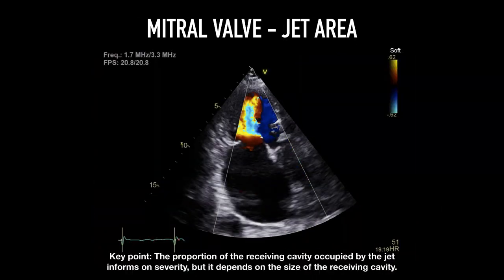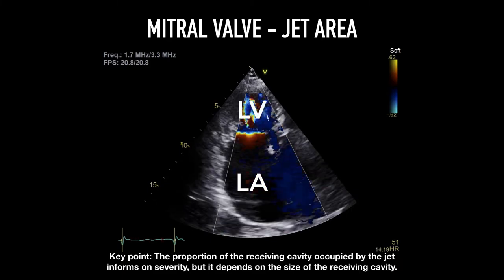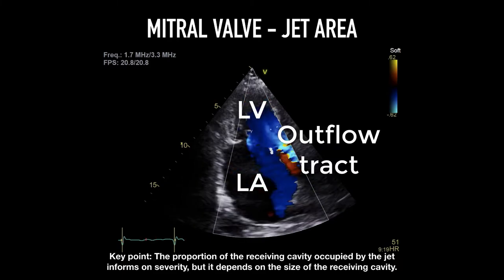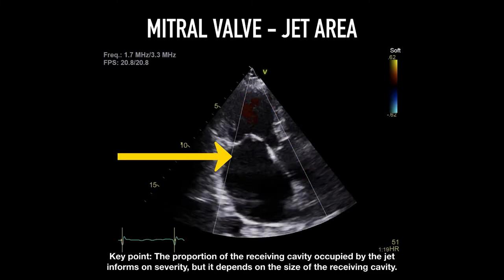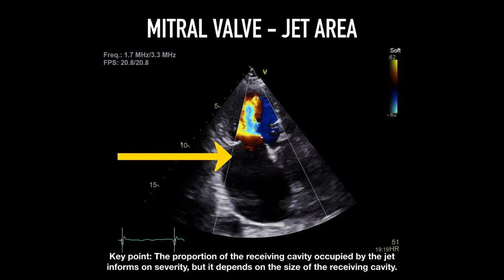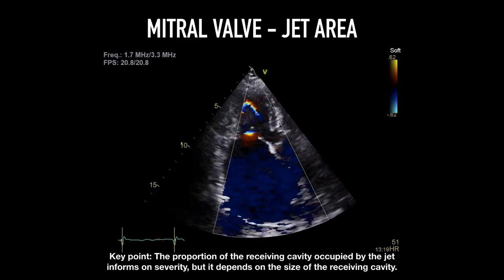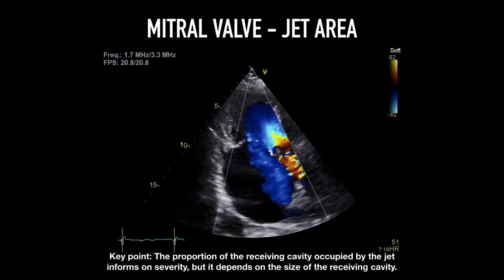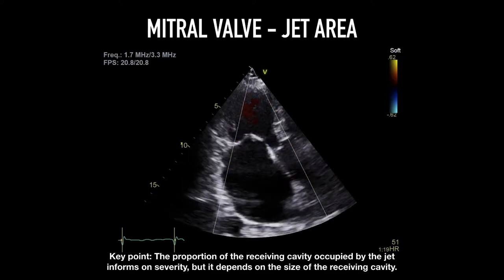This is an apical 3-chamber image where we can see the left atrium, left ventricle, and outflow tract. The jet area in the receiving cavity can be used to quantify the severity of regurgitation, with increasing size correlating with increasing severity. The caveat is that the size of the receiving cavity needs to be accounted for, such as in the case of severe mitral stenosis with probably moderate MR in a severely enlarged left atrium.